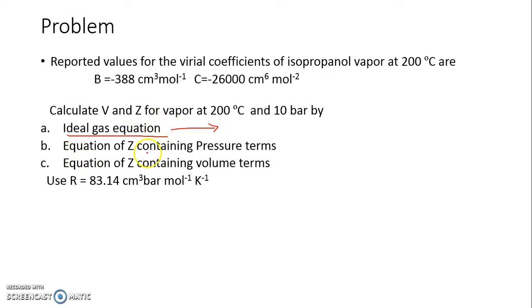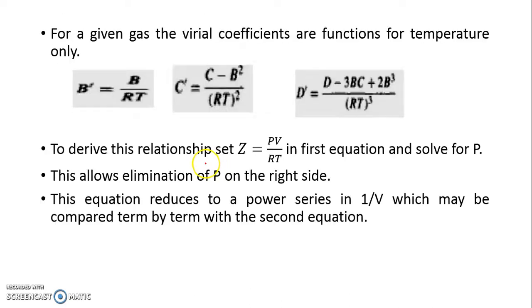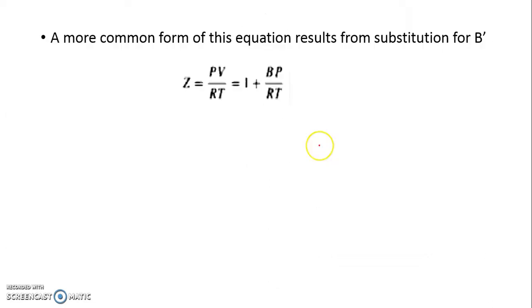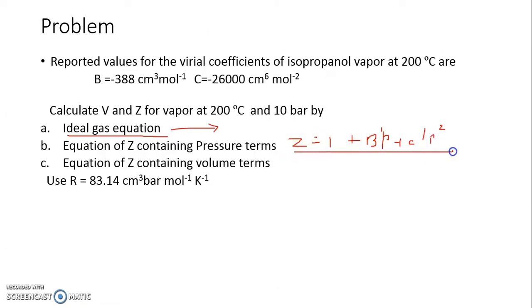For the equation of Z containing pressure term, Z is equal to 1 plus B dash P plus C dash P square. Since B is given and C is given, we also know the relation between B and B dash, C and C dash. So we can calculate B dash, we can calculate C dash and substitute that in the equation. We know the value of P and we get the value of Z. Once we get the value of Z, Z can be equated to PV by RT and you can get the value of V by Z RT upon P.